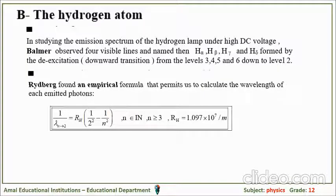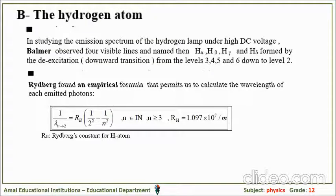For hydrogen, the reciprocal of lambda for transitions from level n down to level 2 is: 1/λ = R_H × (1/2² − 1/n²), where n ≥ 3. The Rydberg constant for hydrogen is R_H = 1.097 × 10⁷ per meter. For n=3: λ = 656.3 nm, called Hα.